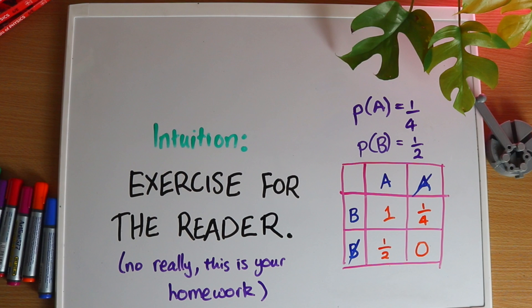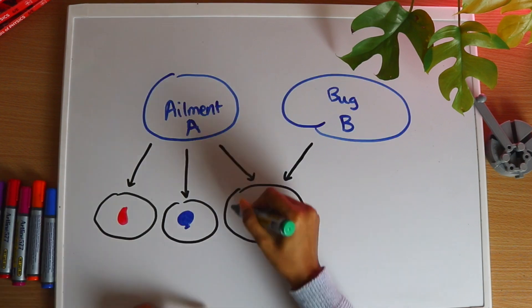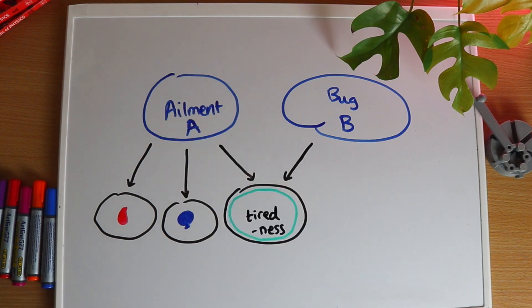Okay, so back to the Bayesian network and our patient who's just told us that they're tired. For this symptom, we can say that both A and B are almost equally likely, but let's try and narrow it down. Which of these symptoms would you ask about next?